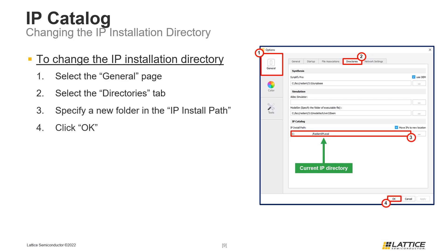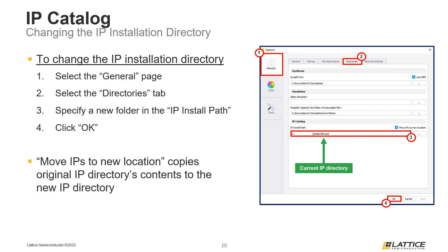If any changes were made in this window, click the OK button in the bottom right to confirm those changes. One important thing to remember when changing the IP Installation Directory is to check the Move IPs to New Location option. Setting this option to active will copy all the contents of the original IP Directory to the new IP Directory. Additionally, the old IP Installation Directory will also be deleted.